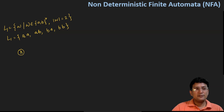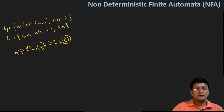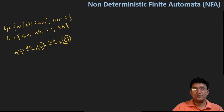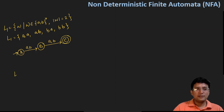So how will you construct the NFA for this? You just think about accepting the strings. You are at the initial state; if you get symbol A or B, you move to the next state. Then if you get another symbol, either A or B, you move to the final state. Any two-length string will be accepted. We are only thinking about how acceptance works, not concerned about all the rejections.